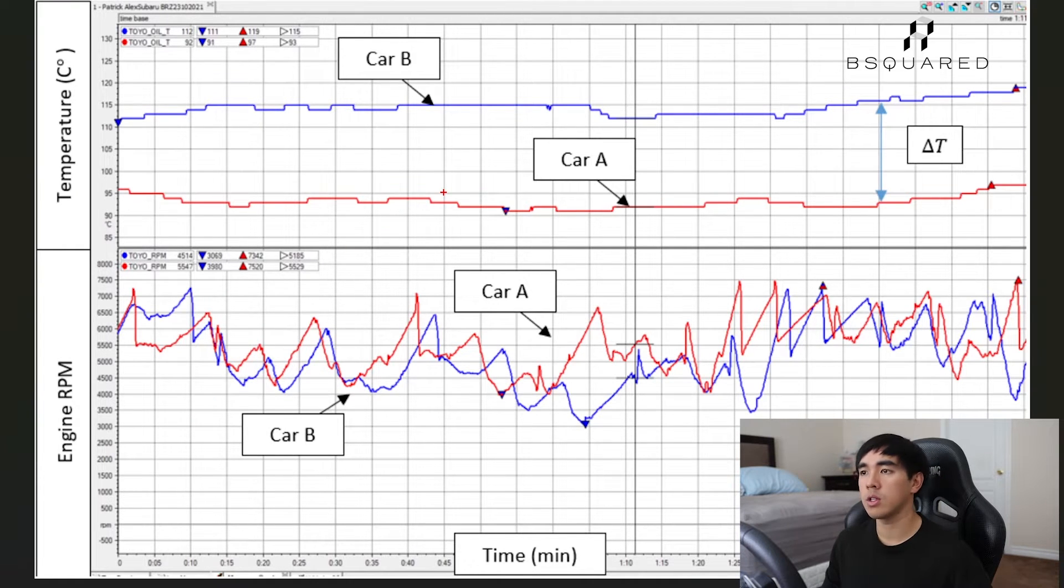From the oil temperatures you guys can probably guess which car has the oil cooler in it. Car A here is hovering at about 95 degrees as a plateau for oil temp for the duration of the lap, and car B starts off at 111 and slowly climbs up to about 119 degrees. So our delta T here is on average 20 degrees for the duration of the hot lap.